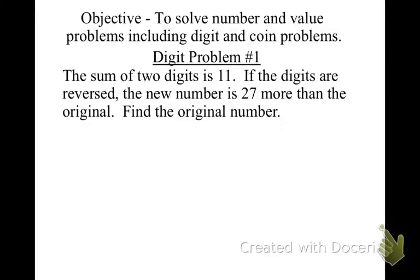So this is 8-6. We are doing digit and coin problems. In the first problem, the first thing we're going to do is we have to identify what our unknowns are. Since we're doing a digit problem, we're talking about a two-digit number. We're going to call x the tens digit, y the ones digit, or the units digit.